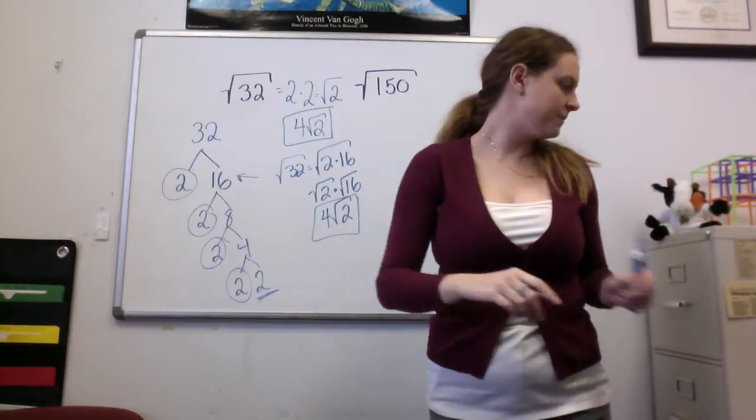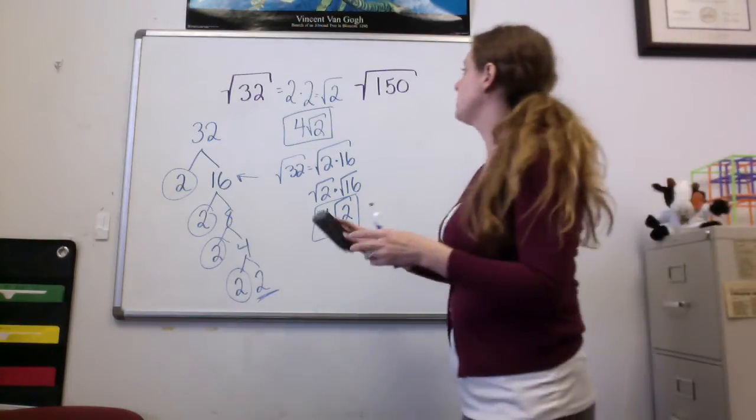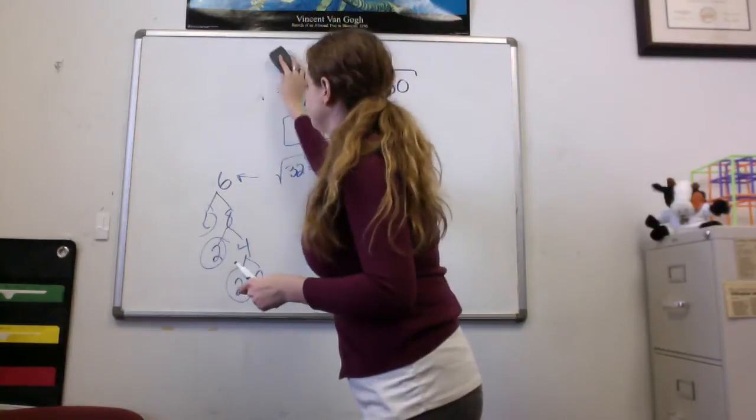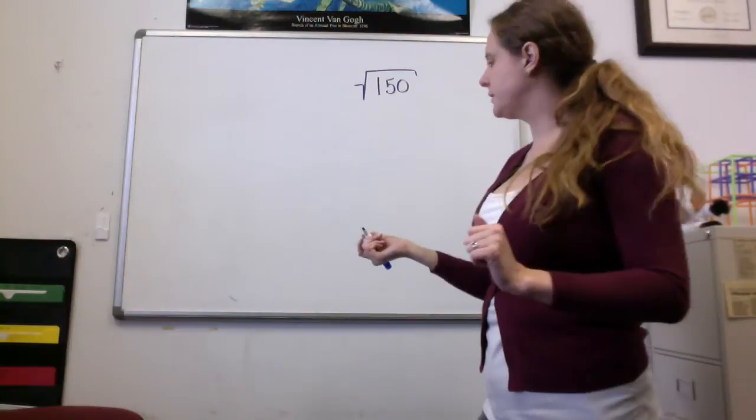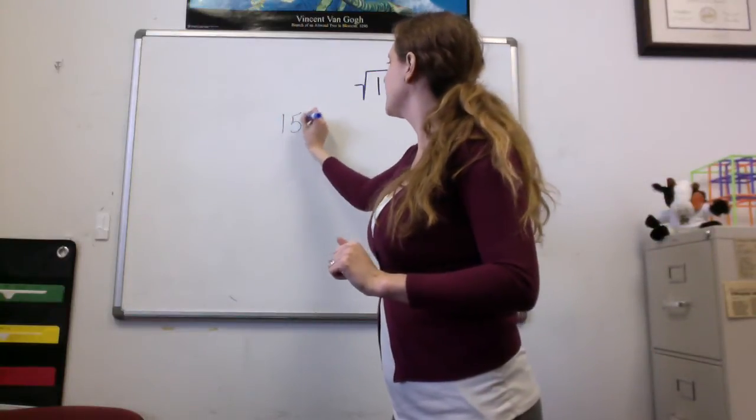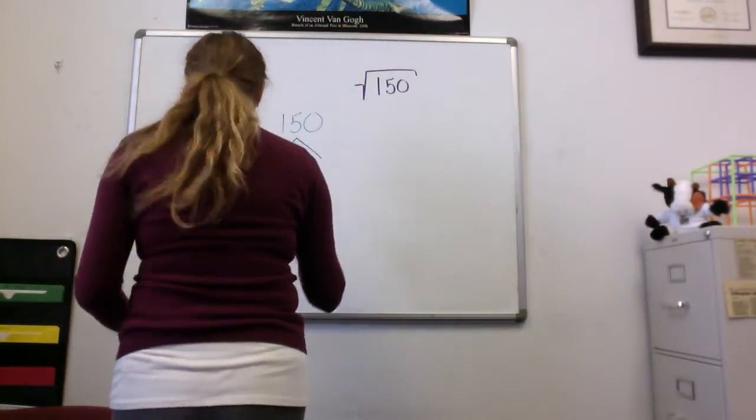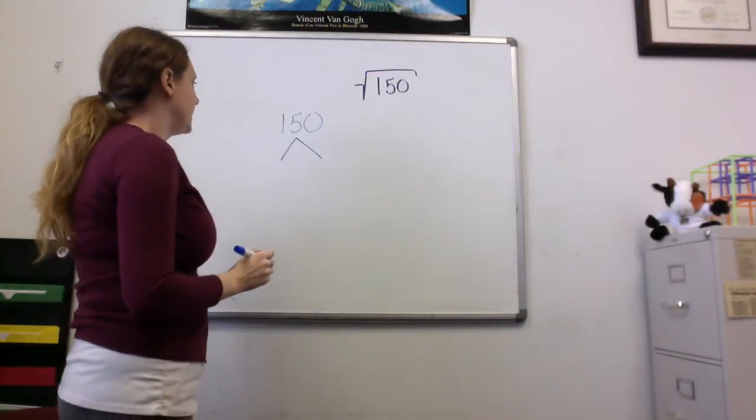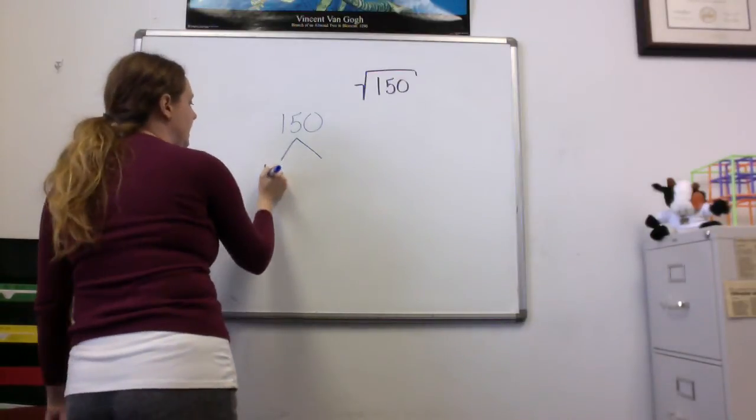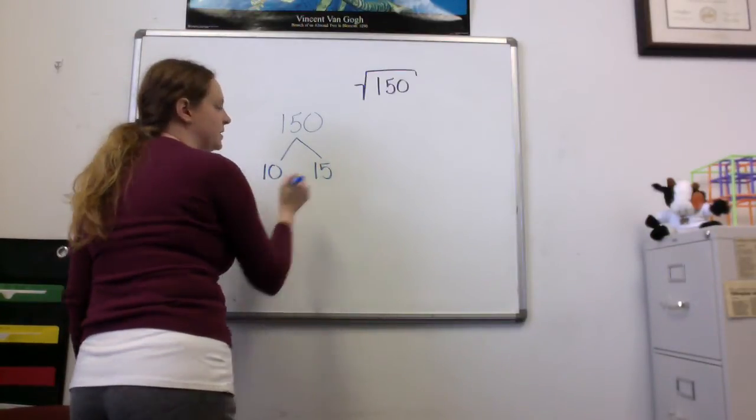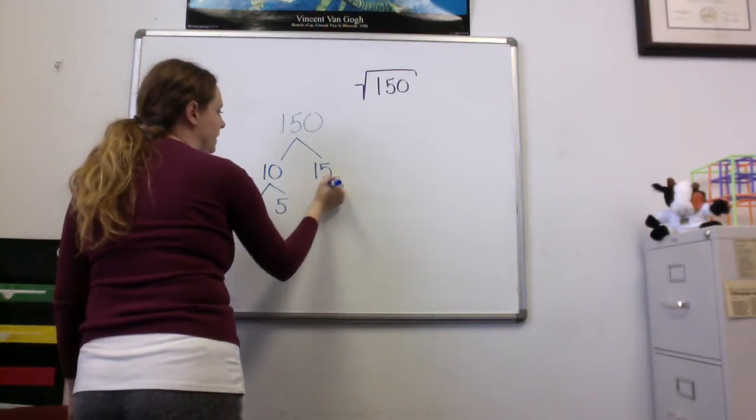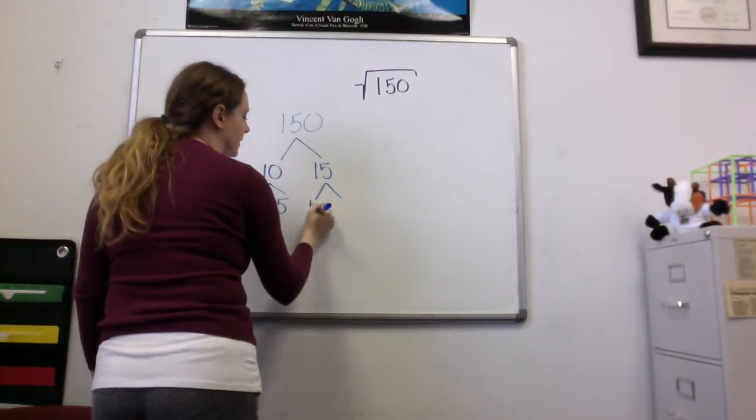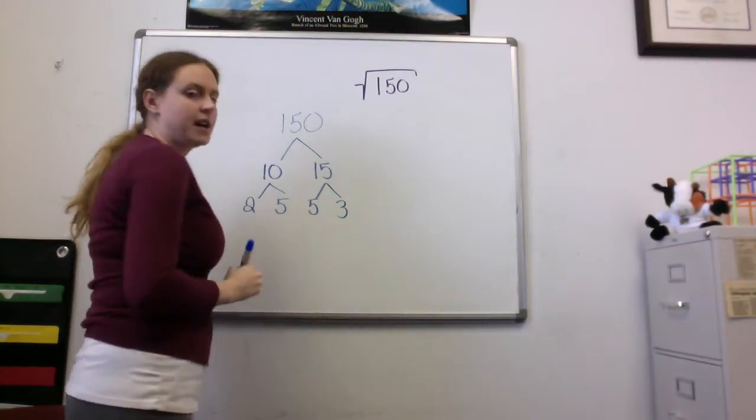Let's do the same thing with the square root of 150. Again, I'll work it both ways. The first way is to make my factor tree. So 150 might be broken down into 10 times 15. 10 is 2 times 5. And 15 is 5 times 3.